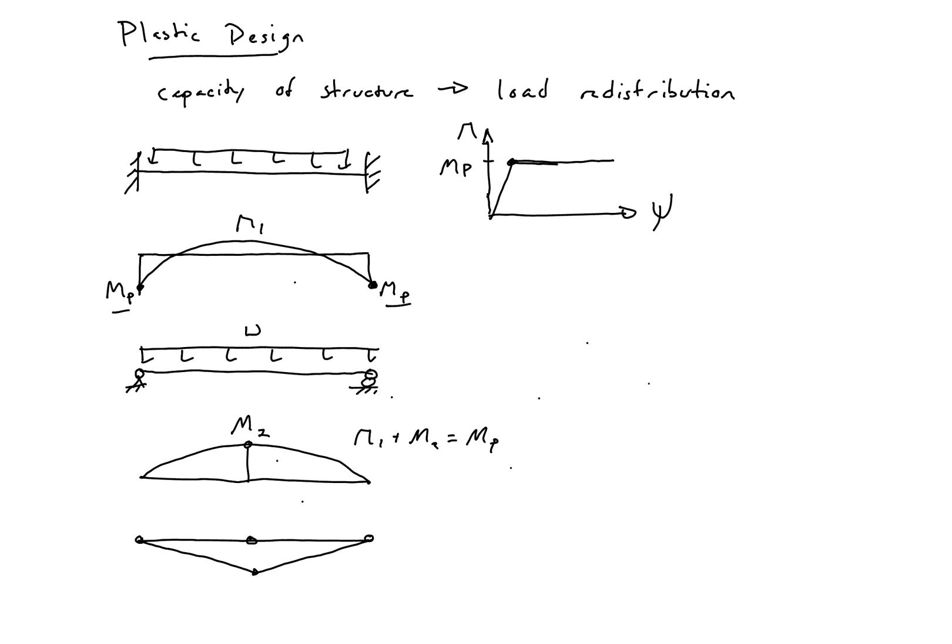So you can see that in a normal design, we would have just been able to design for W1 on our fixed-fixed structure. In our plastic design, our plastic load, we can design for W1 plus W2.